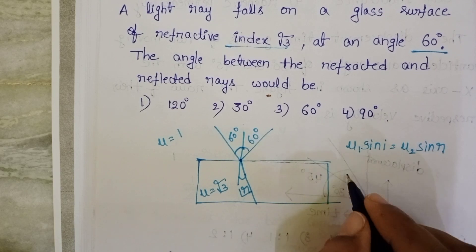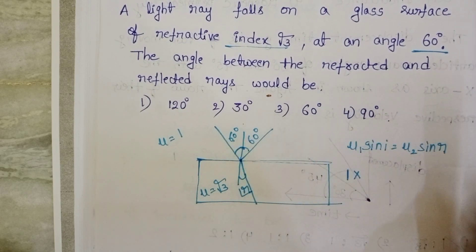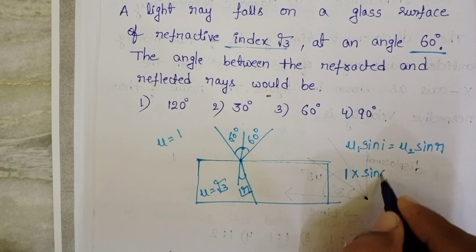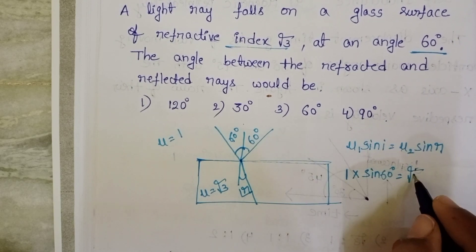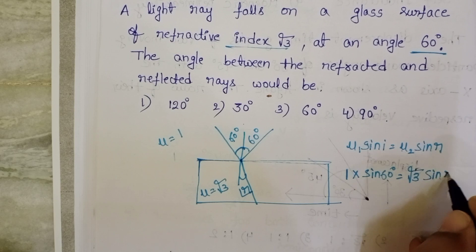Refractive index of air is 1 and angle of incidence is 60, sin 60 equals the given refractive index of the second medium root 3 into sin r.